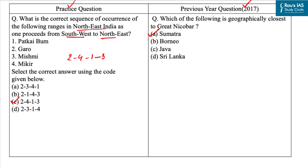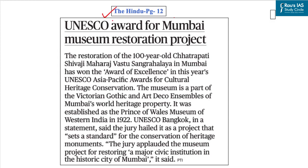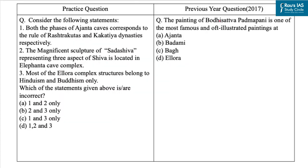Our next question is based on an article from The Hindu newspaper. The restoration of the 100-year-old Chhatrapati Shivaji Maharaj Vastu Sangrahalaya in Mumbai has won the Award of Excellence in this year's UNESCO Asia-Pacific Awards for Cultural Heritage Conservation. The museum is also part of the Victorian Gothic and Art Deco Ensembles of Mumbai's World Heritage property. Since UPSC has been asking questions on UNESCO cultural heritage sites, we have taken up a practice question based on three important UNESCO sites in Maharashtra.